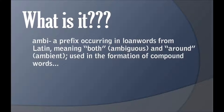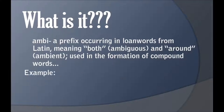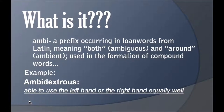Before we shift to ambitransitive, it's better to discuss the word itself. 'Ambi' is a prefix occurring in words from Latin meaning 'both,' as in 'ambi,' and 'around,' as in 'ambient' — used in the formation of compound words. For example, take the word 'ambidextrous,' which uses the same prefix. It means able to use the left hand or the right hand equally well — both hands. Here, 'ambi' is used in the sense of 'both.'